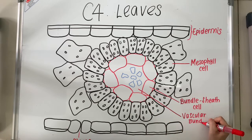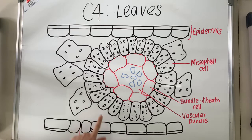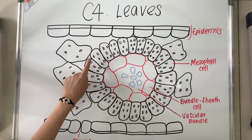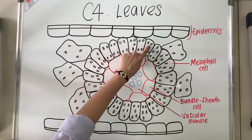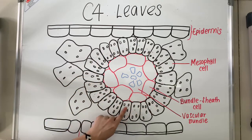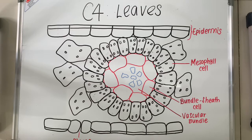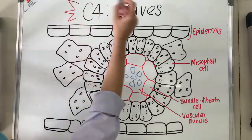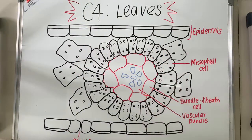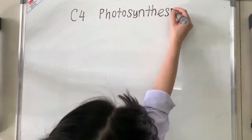If you haven't noticed, the arrangement of the mesophyll cells in C3 and C4 plants differ from each other. In C3 leaves, mesophyll cells are packed loosely around the bundle sheath cells, whereas in C4 leaves, mesophyll cells surround the bundle sheath cells tightly. Since C4 photosynthesis is mainly found in tropical plants, this arrangement separates RuBP and the enzyme RuBisCO in the bundle sheath cells from high oxygen concentration, so that RuBP will react with carbon dioxide instead of oxygen, which would lead to a decrease in the rate of photosynthesis and waste of RuBP.